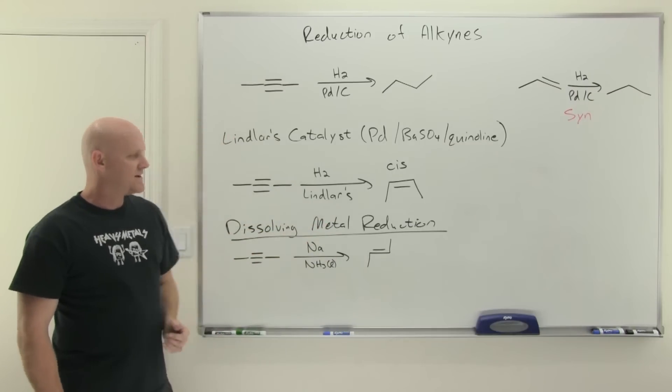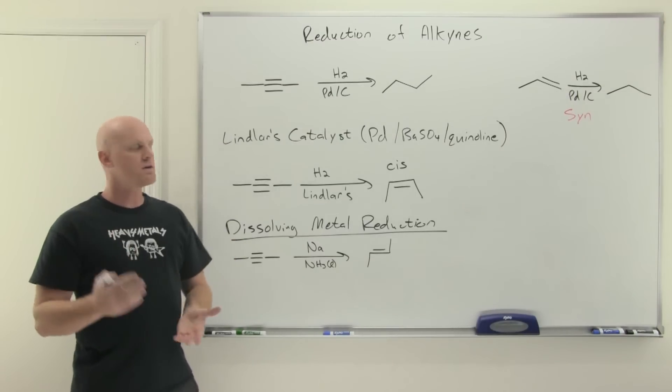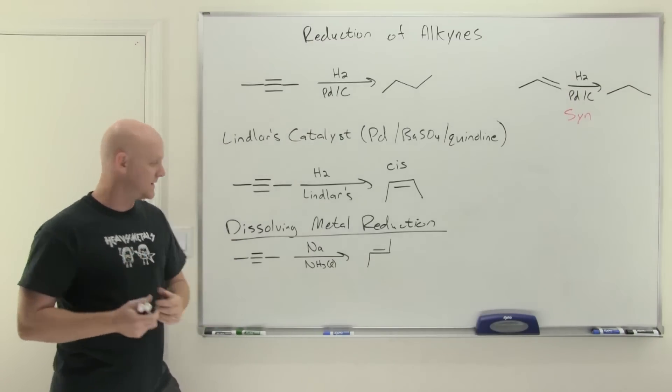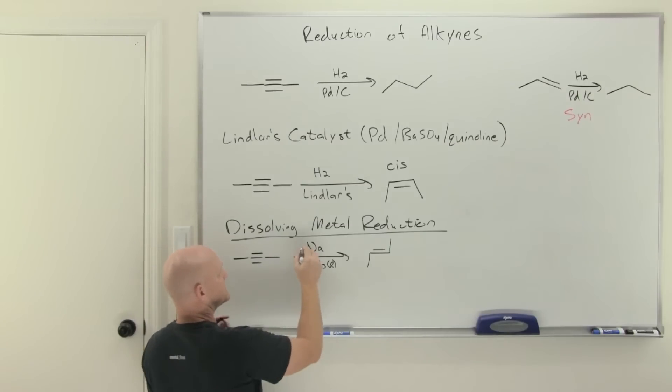How does this work? Why does this end up as a trans alkene? We're going to dive into the mechanism a little bit, but note a lot of you won't be on the hook for this mechanism, but some of you will. At the very least it is instructive for pointing out why we get this trans alkene instead.